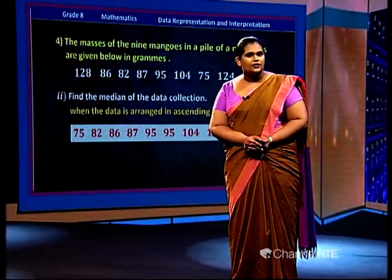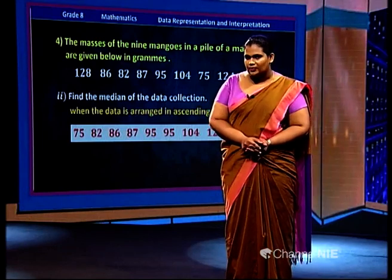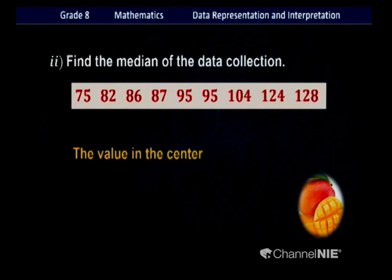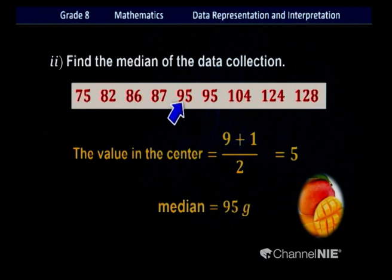To find the median position, add 1 to the number of data and divide by 2: 9 plus 1 is 10, divided by 2 is 5. So the fifth data is the median. Counting: 1, 2, 3, 4 and 5 — the fifth value is 95. Therefore the median is 95.